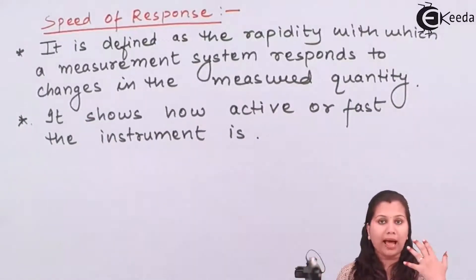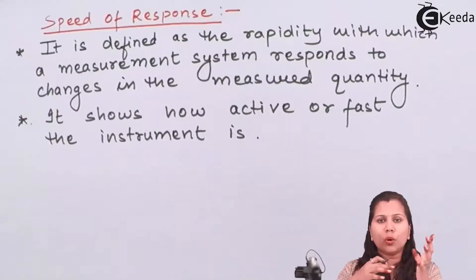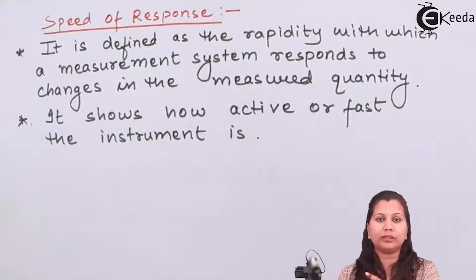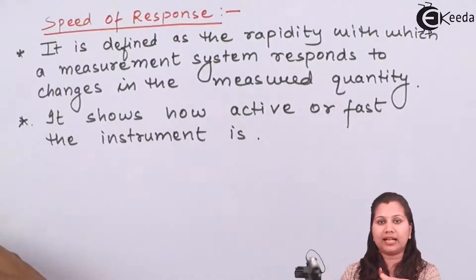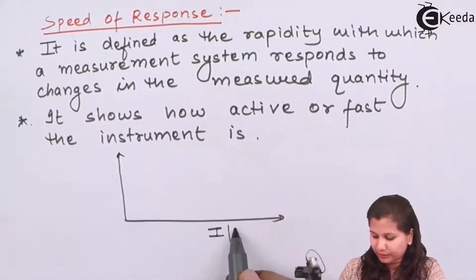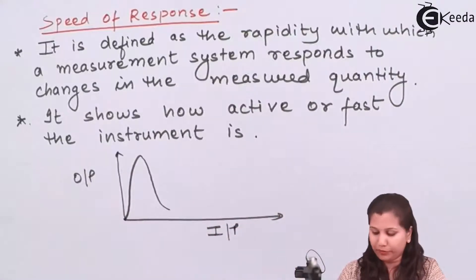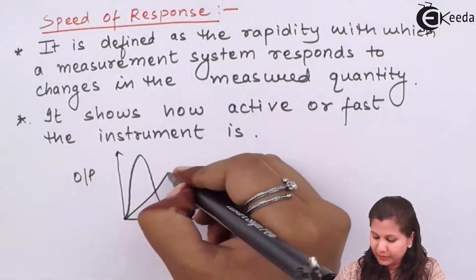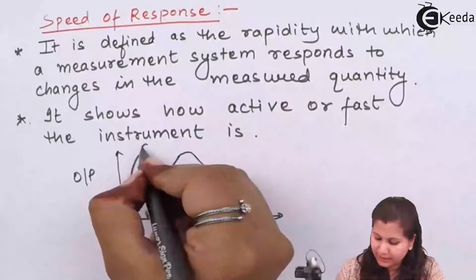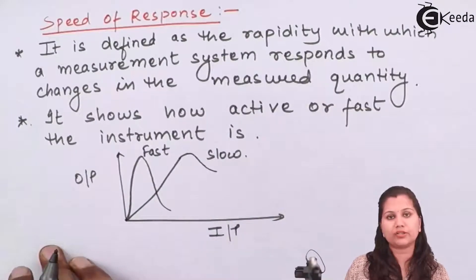Speed of response is the rapidity with which a measurement system responds to changes in the measured quantity. If the instrument is responding very fast, its speed of response is fast. If it is responding very slowly, then the response is sluggish. In control systems, systems are classified as over-damped, critically damped, under-damped, and undamped based on their speed of response. If the input changes and the output responds quickly, that system is fast; if the output responds slowly, that system is very slow.